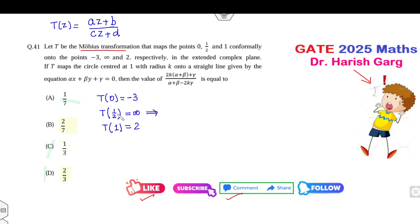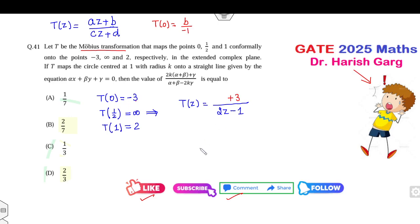Since T(1/2) = ∞, the denominator must be (2z − 1) — that is the only way it becomes infinity. From T(0) = −3, we get b/d = −3; since d = −1, we get b = 3. Using the third condition T(1) = 2: substituting z = 1 gives (1 + 3)/(2·1 − 1) = 4/1 = 4... correcting: (a·1 + 3)/(2·1 − 1) = 2, so a + 3 = 2, giving a = −1. So the Möbius transformation is T(z) = (−z + 3)/(2z − 1).